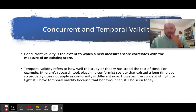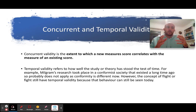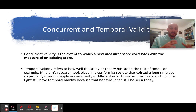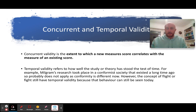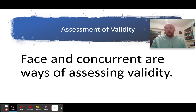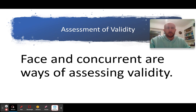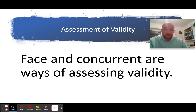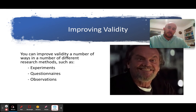You need to make this assessment: is this theory still relevant today? A good way to phrase it is: does the society in which this study was done differ significantly from the society we have today? Also worth noting — face and concurrent validity are ways of assessing reliability, which is actually quite useful if you get an exam question asking how to assess reliability.